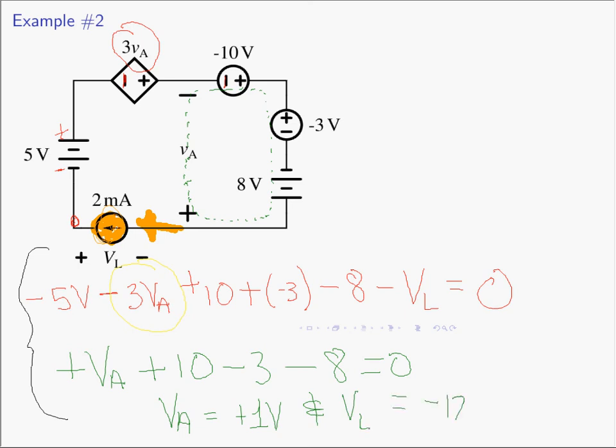Now you've seen how to deal with current sources and voltage sources. A voltage source is a circuit element that maintains a specified voltage across it regardless of current flowing through it. A current source does the opposite — it maintains a current through it regardless of the voltage across it. Controlled sources are the exact same thing, except their values are based on a quantity somewhere else in the circuit. They still must satisfy all the laws: KVL, KCL, and the passive sign convention. Now we have circuit elements which can provide energy to our circuits, and we're ready to solve for anything we need.